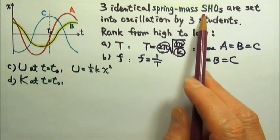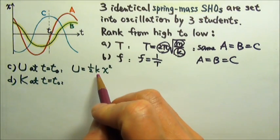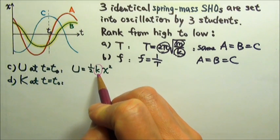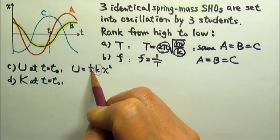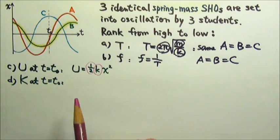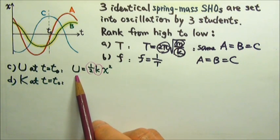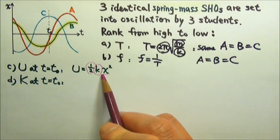There are three identical oscillators. That means identical springs, k's are the same. ½ is always a constant. That means to compare the potential energy, we just have to compare the x.